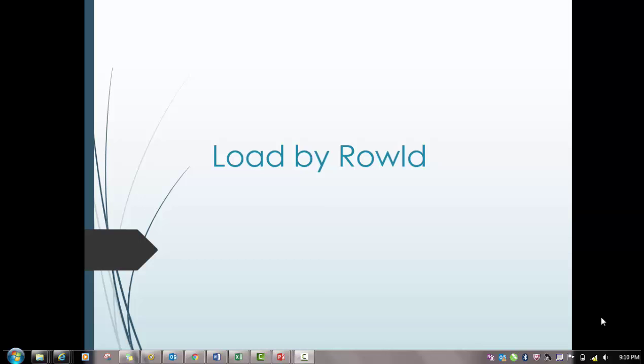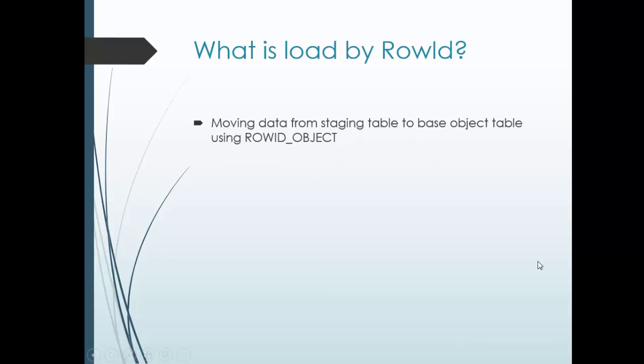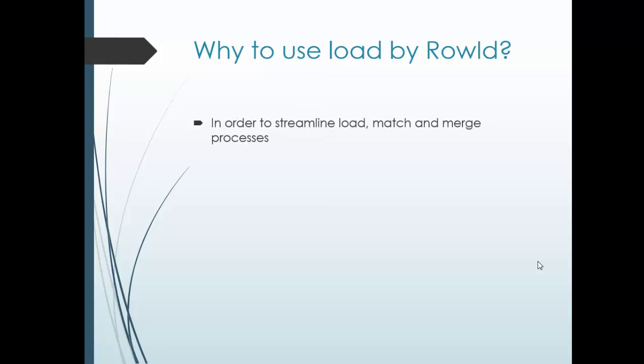Load by Row ID means moving data from the staging table into the base object table by using the row ID object column. Do we have any other option to load data? Yes — we can preserve a unique column from the source system and use that column to load data into the base object. So either you use the preserved column from the source system or the row ID object, but it is always preferable to use the row ID object.